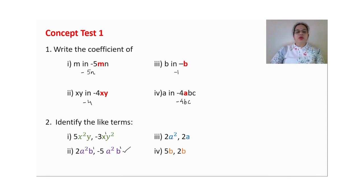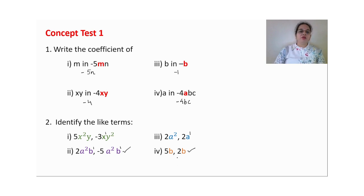For 2a² and 2a: the powers of a are different, so these cannot be like terms. For 5b and 2b: the variable is the same and the powers are also the same, so these are like terms. The remaining ones will be unlike terms.